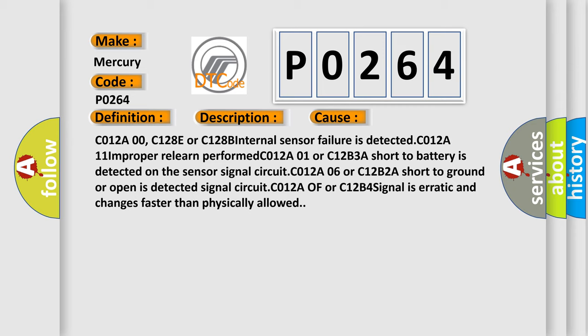C012A00, C128E or C128B internal sensor failure is detected. C012A11 improperly learned perform. C012A01 or C12B3A short to battery is detected on the sensor signal circuit. C012A06 or C12B2A short to ground or open is detected on the sensor signal circuit. C012A or C12B4 signal is erratic and changes faster than physically allowed.